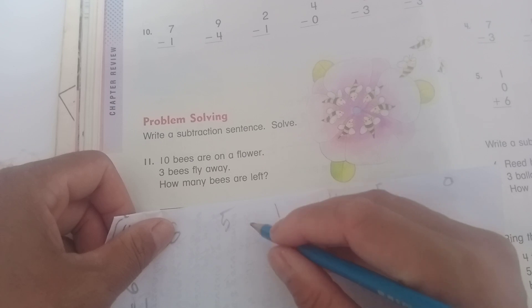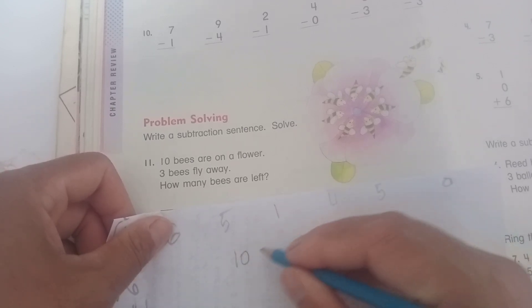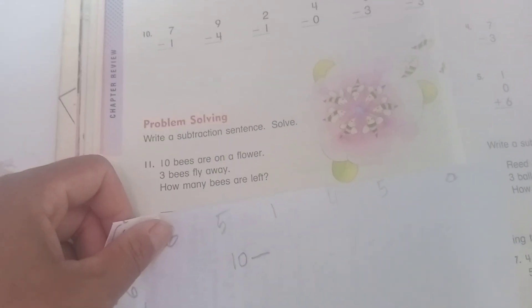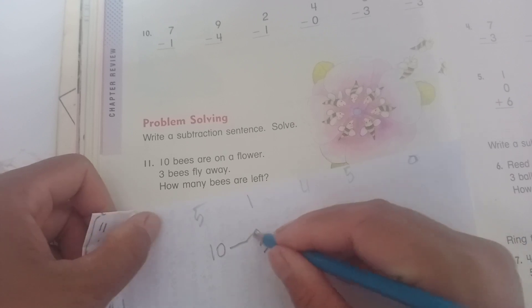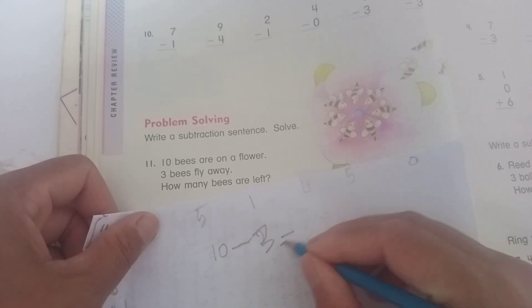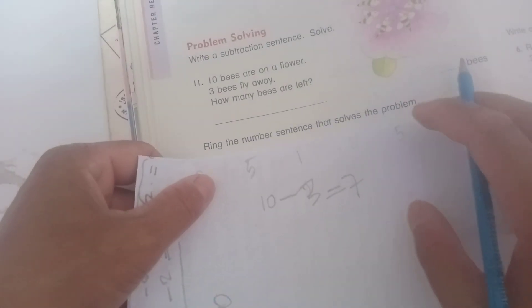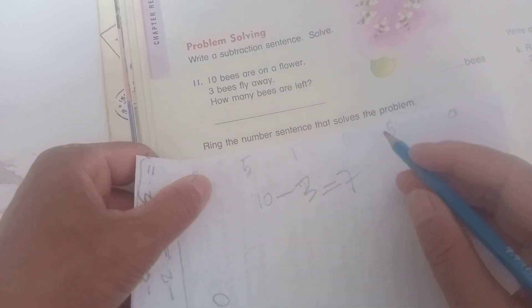You can see, ten minus three equals seven. You can answer: there are seven bees left.